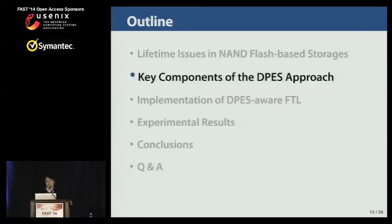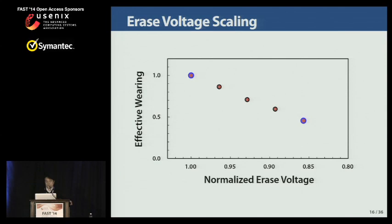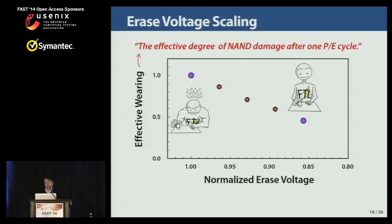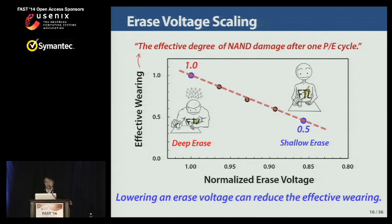This figure shows how much NAND damage is reduced by lowering an erase voltage, from NAND cycling tests by changing the erase voltages. As illustrated by the FlashMan example, a soft eraser can improve the endurance of paper. Similarly, NAND endurance can be improved by lowering an erase voltage. Since different erase voltages degrade NAND endurance by different amounts, we introduce a new reliability metric called Effective Wearing, which represents the effective degree of NAND wearing after one P/E cycle instead of the number of P/E cycles. Erasing with a lower erase voltage can significantly reduce the effective wearing compared to deep erase.